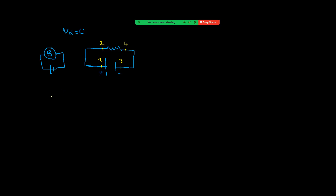The role of the battery is to pump charges from low potential to high potential. The work done by the battery per unit charge is called the EMF of the battery, denoted by epsilon (ε). The full form is electromotive force, but it is not actually a force — it is like work per charge, similar to potential.